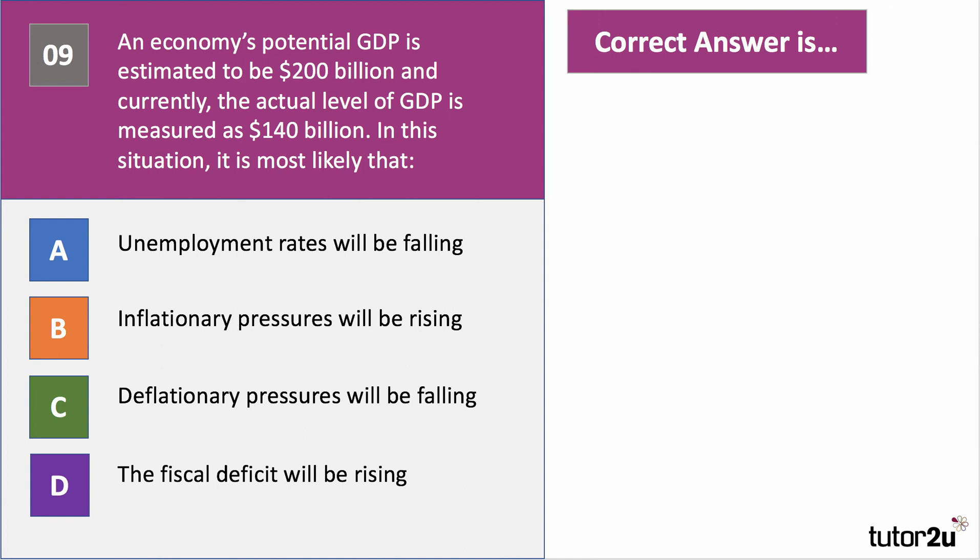The right answer is D — the fiscal deficit will be rising. Unemployment is probably going up if actual GDP is less than potential. Inflationary pressures will tend to be falling, and deflationary pressures will be increasing. The fiscal deficit rises because unemployment is higher, so people pay less income tax, and business profits are lower, so corporation tax revenues may fall. Where actual GDP is less than potential, an economy is operating well within its PPF, and therefore the government's cyclical budget deficit will tend to rise.